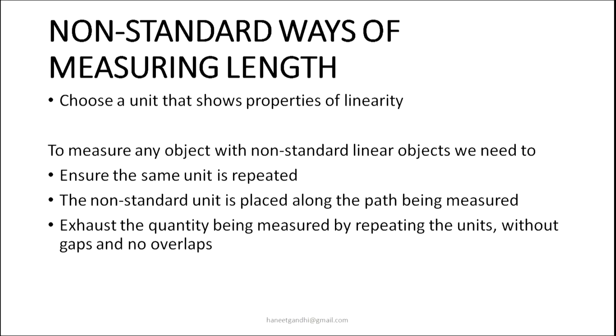Let us now look at some of the ways of measuring length, area, volume and weight through non-standard ways. Let us begin with our one-dimensional aspect — measuring length. To measure a length with a non-standard unit, you need to choose a unit that shows properties of linearity. You need to ensure that the same unit is repeated again and again along the entire length. You cannot change different units while doing one measurement. The non-standard unit should be placed along the path being measured, and finally exhaust the quantity being measured by repeating the unit without gaps and no overlaps.